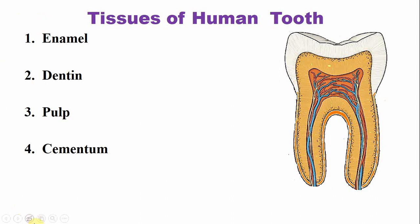Enamel, dentine, and cementum are the hard tissues of the tooth, while the pulp is the soft tissue of the tooth. This is a picture of the longitudinal section of a molar. Here you can see the enamel, this is the dentine, the central portion is the pulp, and the thin hard tissue that lines the root dentine is the cementum.